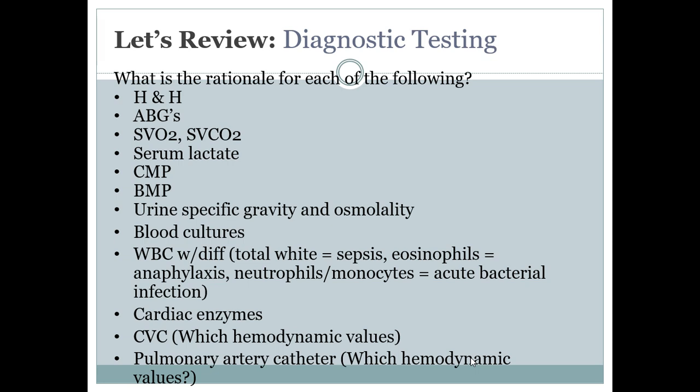SVO2 and SCVO2 tell us about inadequate oxygen delivery. SVO2 is mixed venous oxygen saturation — if less than 60%, it indicates increased oxygen extraction at the tissue level, meaning decreased oxygen delivery. SVO2 is a reflection of oxygen consumption at the tissue level. SCVO2 is central venous oxygen saturation. Serum lactate indicates acidosis and sepsis — anything greater than 2 is abnormal, and the higher it gets, the higher the mortality rate.